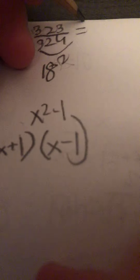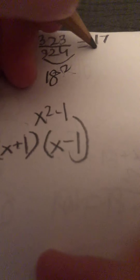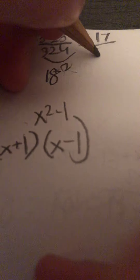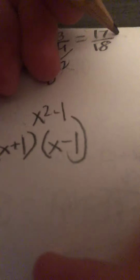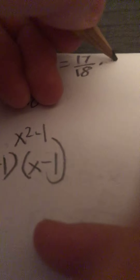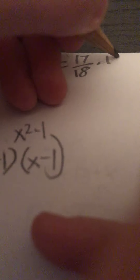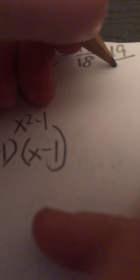That gives us 17 and 19. So what this is telling us is that the expression equals 17/18 times 19/18.